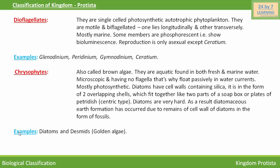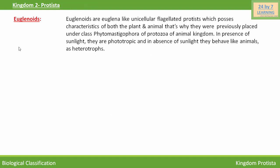Next is euglenoids. Euglenoids are Euglena-like unicellular flagellated protists which possess characteristics of both the plant and the animal. That is why they were previously placed under class Phytomastigophora of Protozoa of the animal kingdom. In the presence of sunlight they are phototrophic, and in the absence of sunlight they behave like animals as heterotrophs. Their example is Euglena.